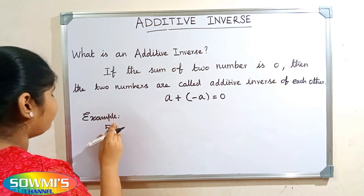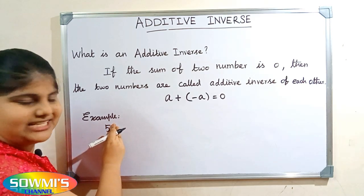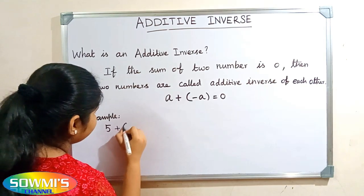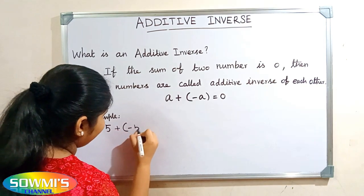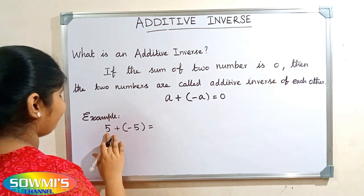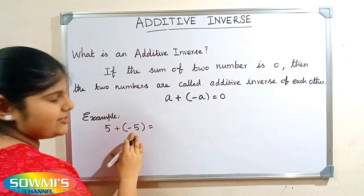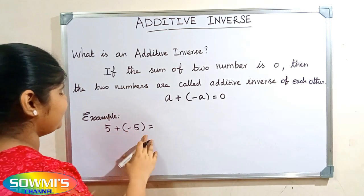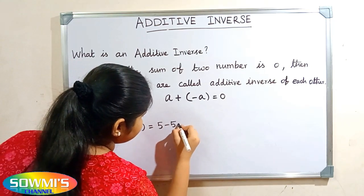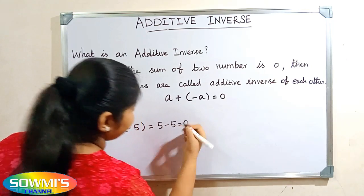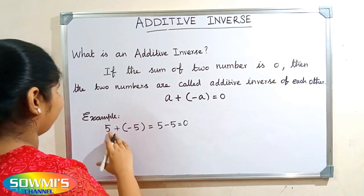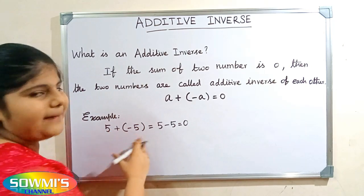The opposite number of five is minus five. So, five plus minus five — five plus into minus will be minus — so five minus five is equal to zero. So, the additive inverse of five is minus five.